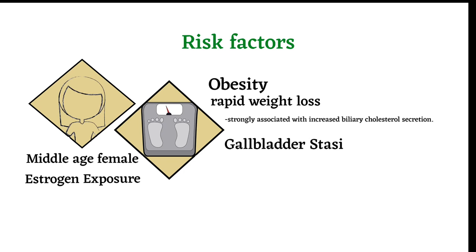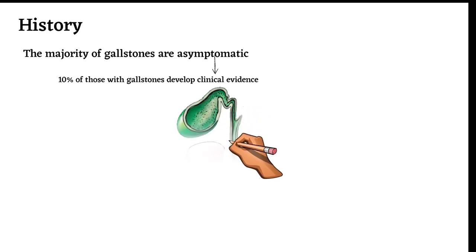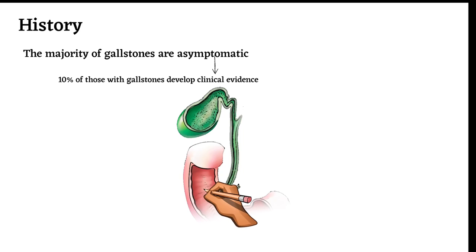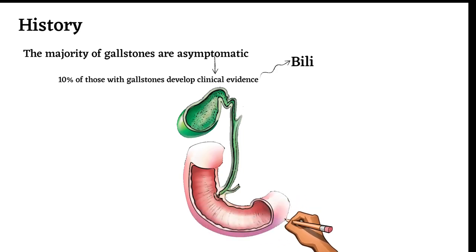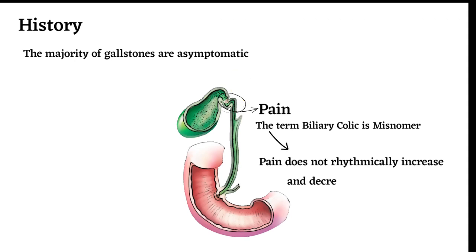The majority of gallstones are asymptomatic, and only about 10 percent of those with gallstones develop clinical evidence of gallstone disease, which is usually manifest as either biliary pain or cholecystitis. If a gallstone becomes acutely impacted in the cystic duct, the patient will experience pain.